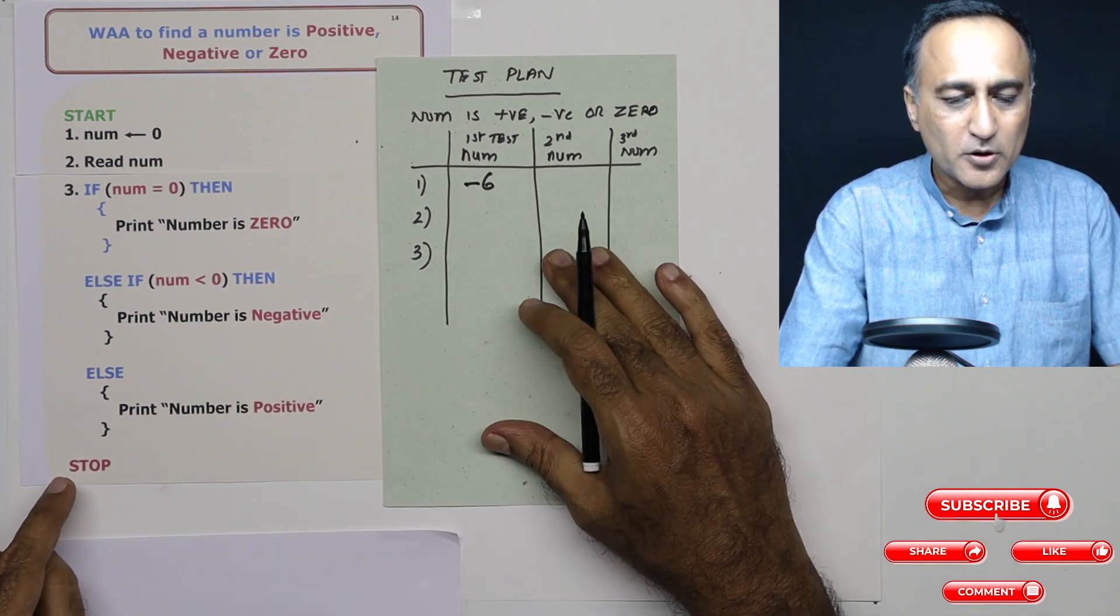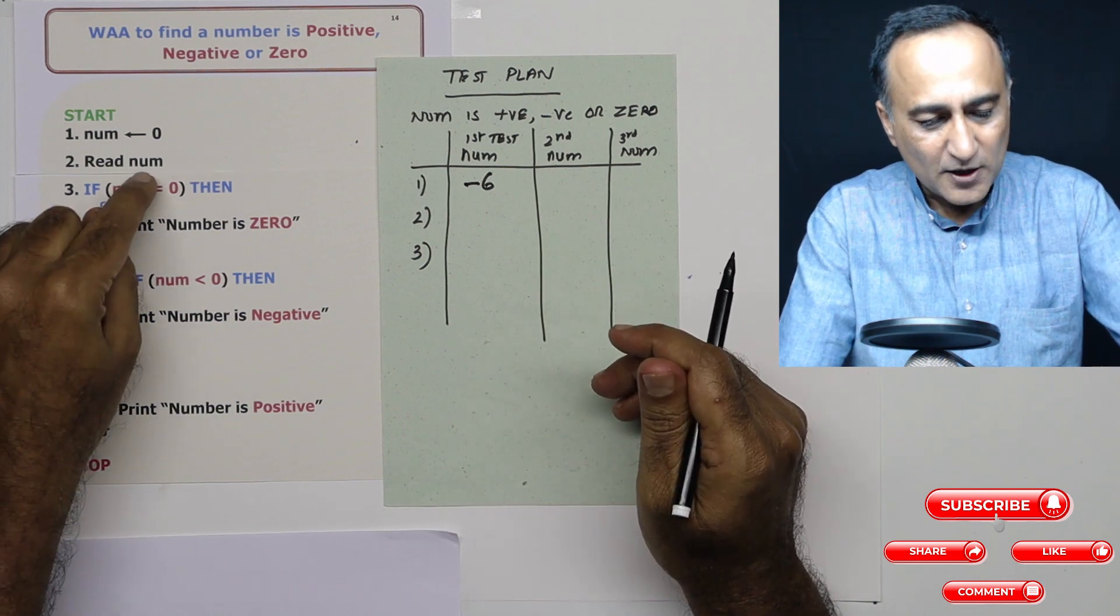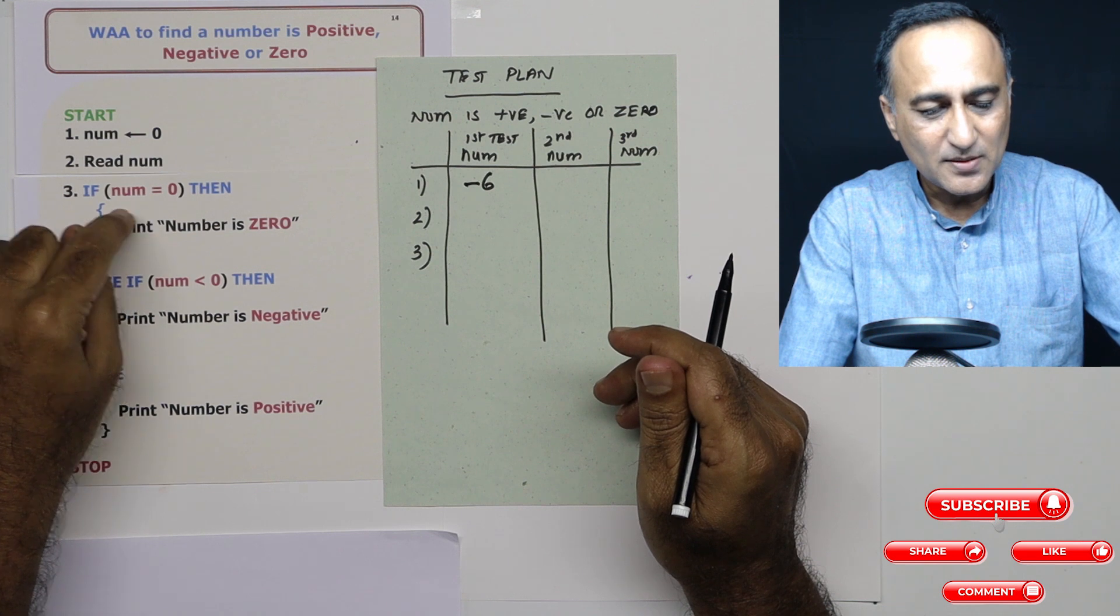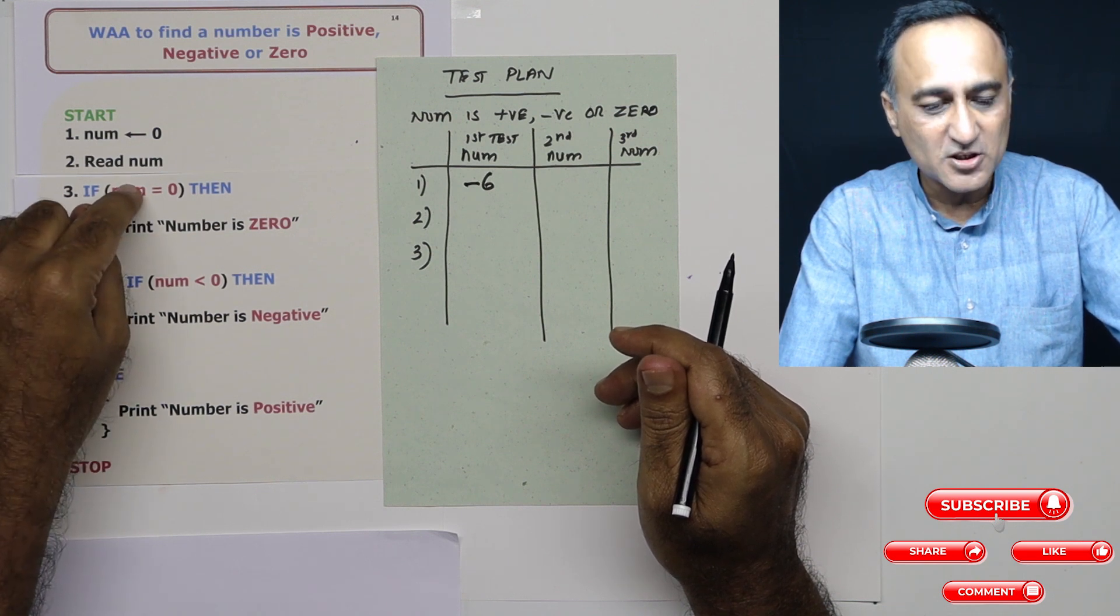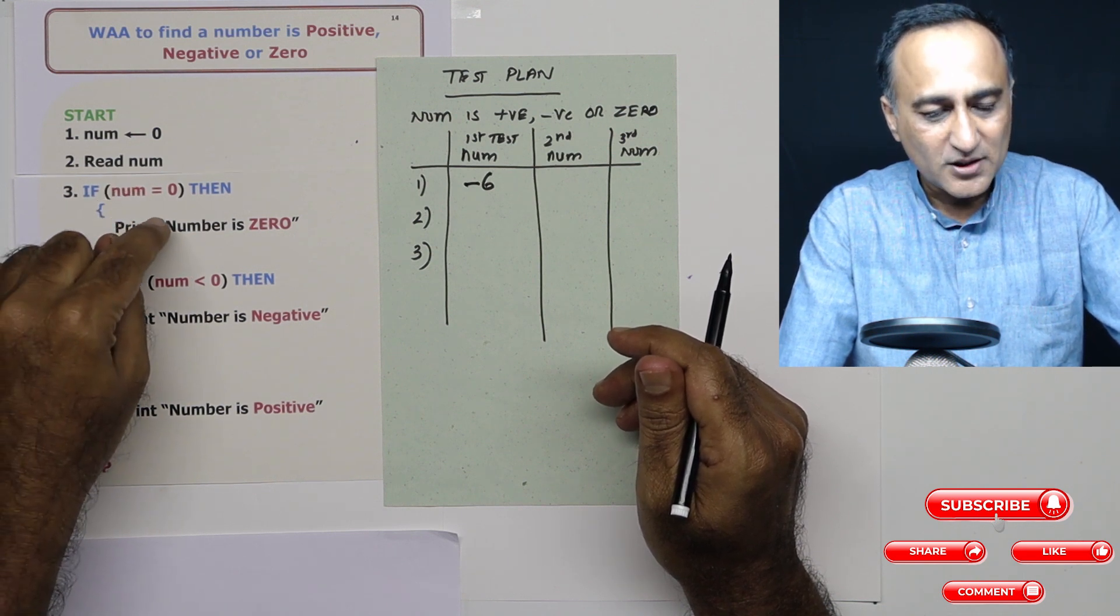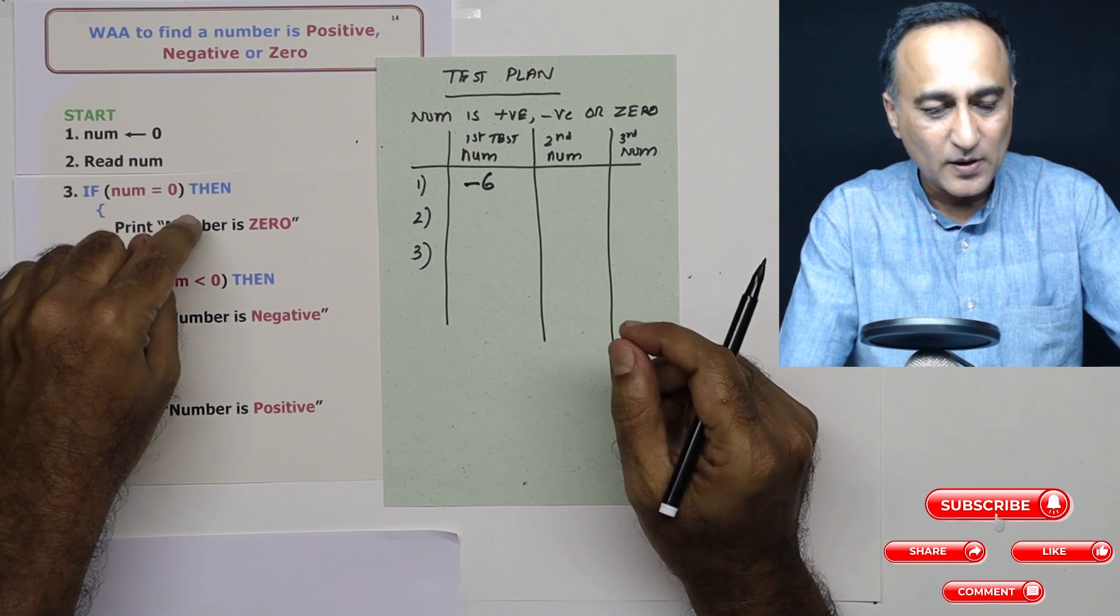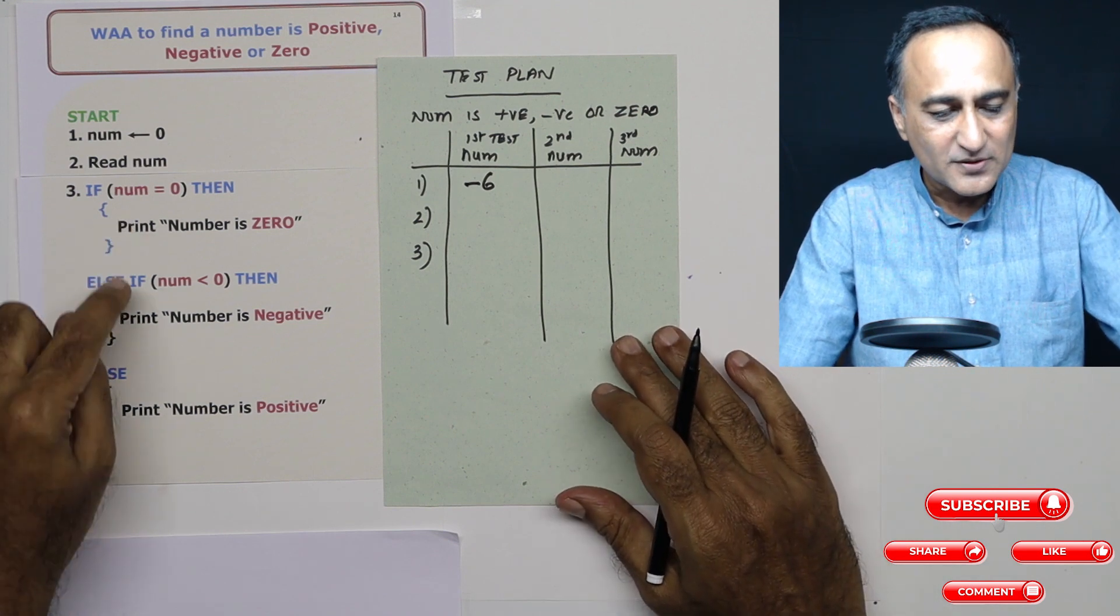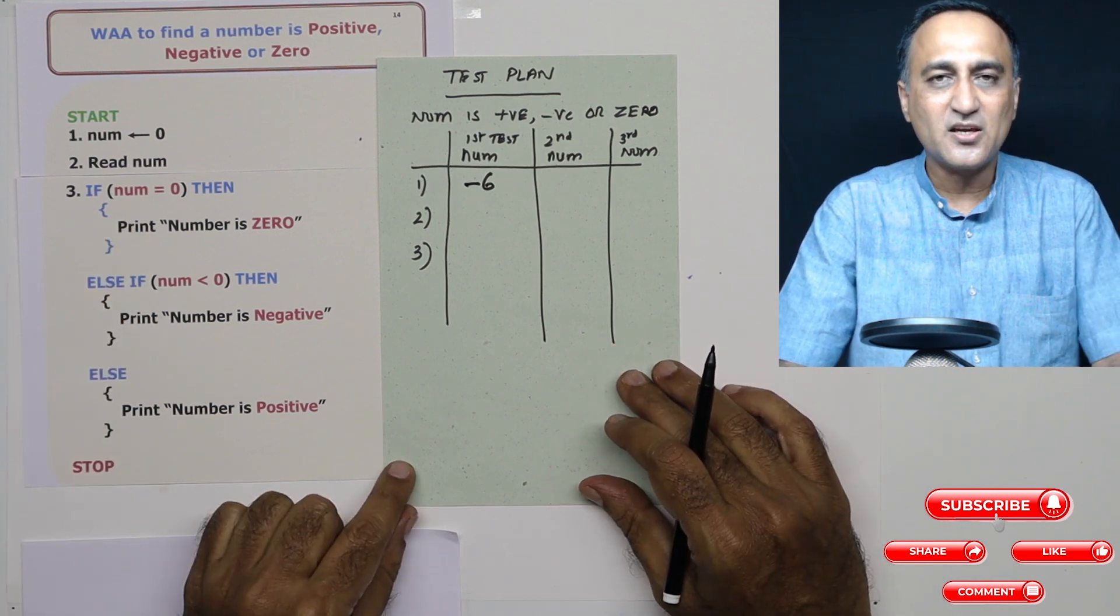You need to understand one important concept here. If one of this condition is true, it will execute the block associated with that condition. It will not execute all three at all. It's not possible that it will execute this, this and this at the same time. At the most, only one of these three is going to be executed.